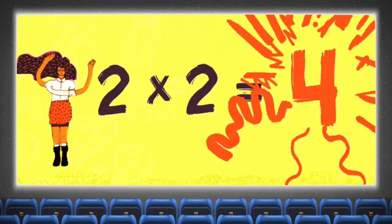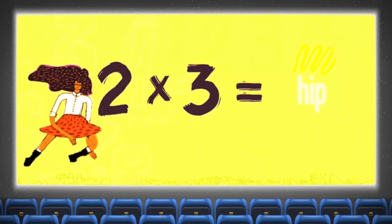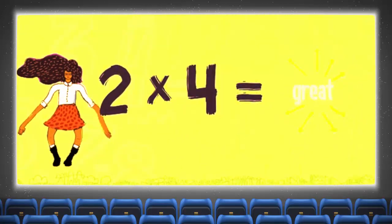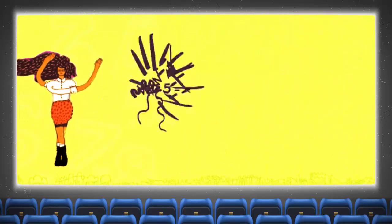Two times three is hip, two times three is six. Two times four is great, two times four is eight. Two times five, do it again, two times five is ten.